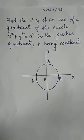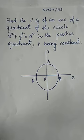Dear students, in this video we are going to find the CG of an arc of a quadrant of the circle x² + y² = h² (radius a) in the positive quadrant, where rho is constant.